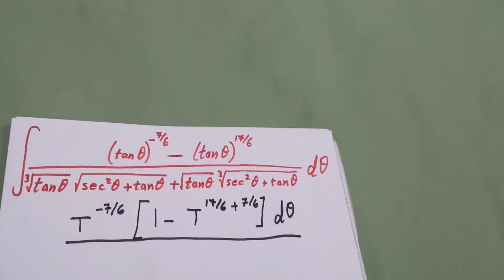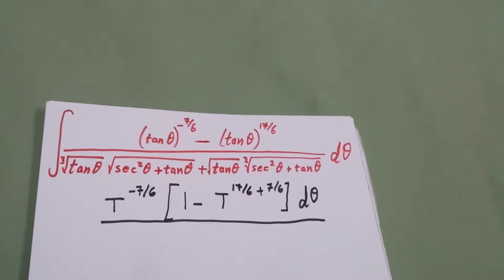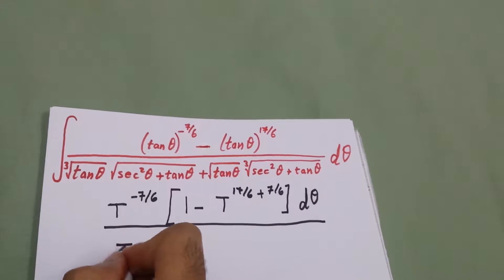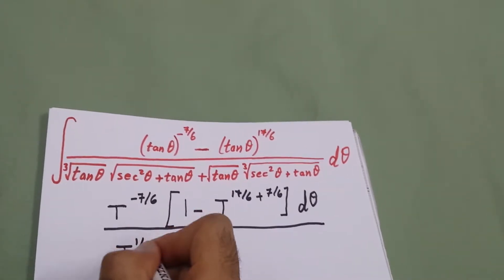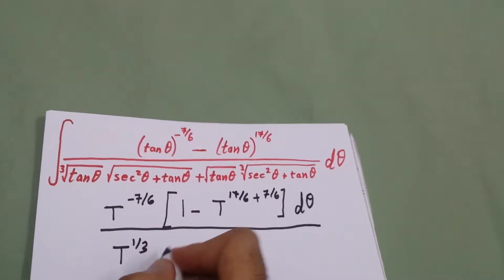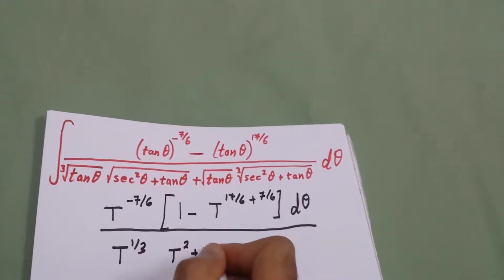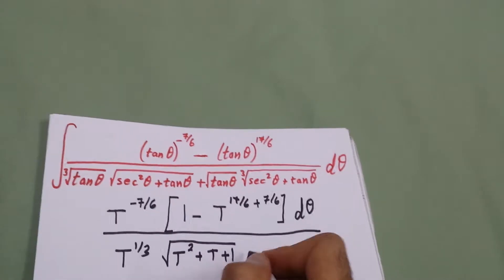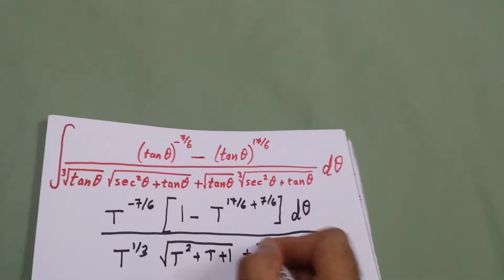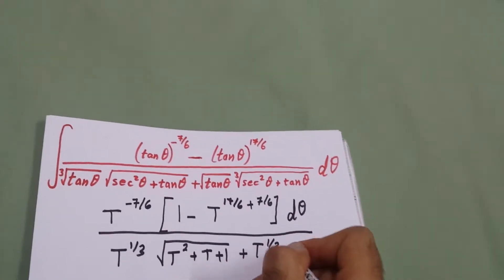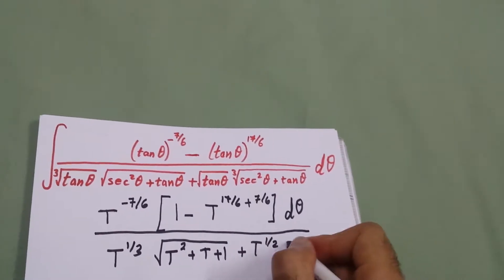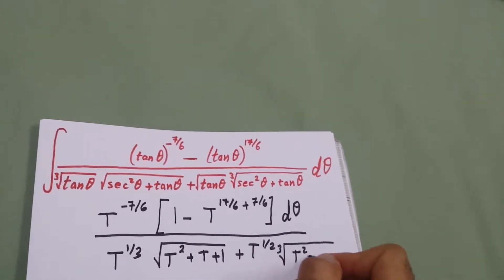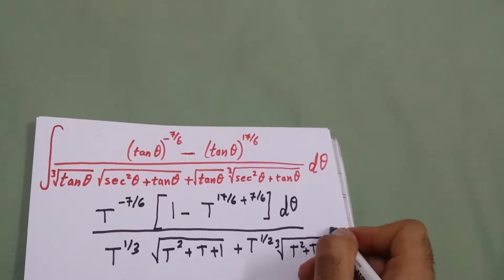In the denominator, instead of secant squared I will write it as tan squared plus 1, so we will have tan to the power 1 over 3 and tan squared plus tan plus 1 under the square root, plus tan to the power one half times the cube root of tan squared plus tan plus 1.